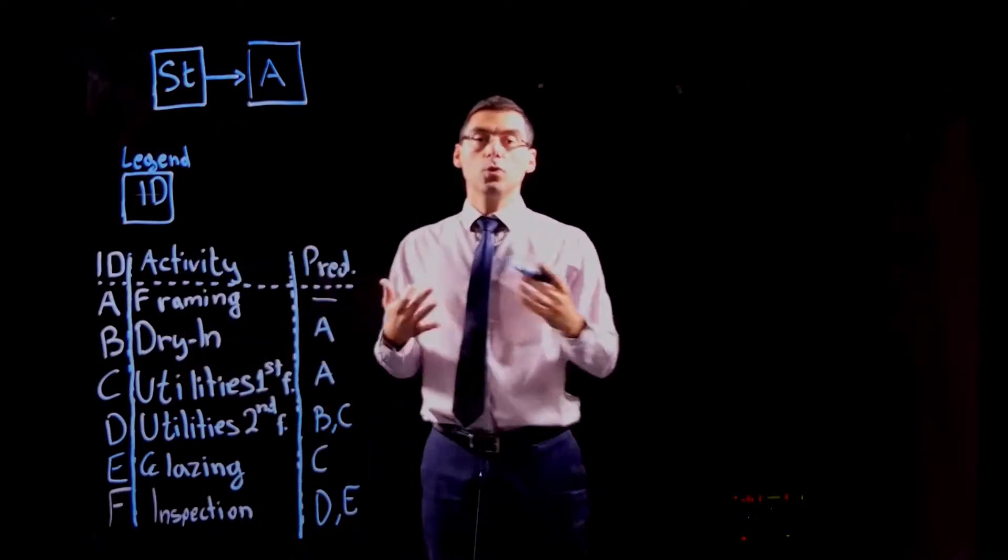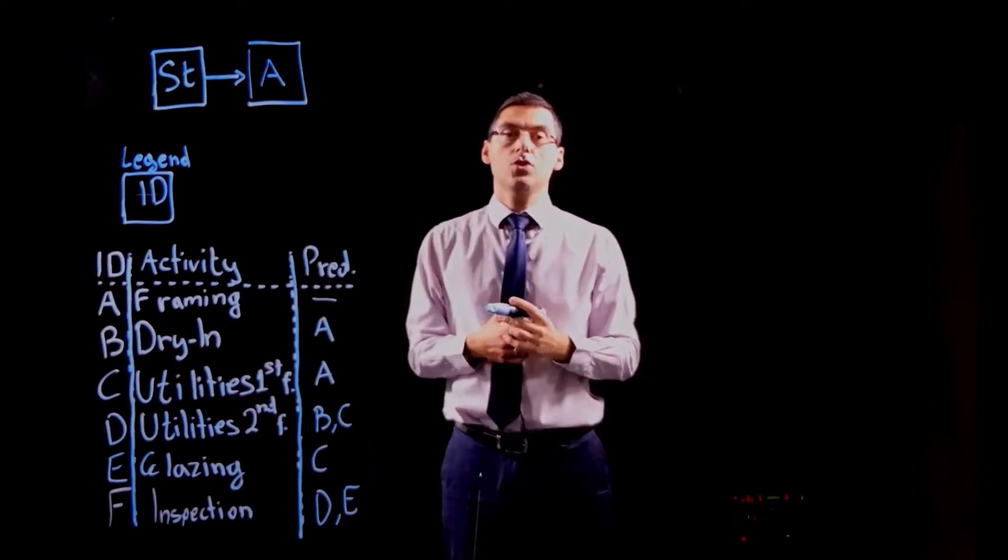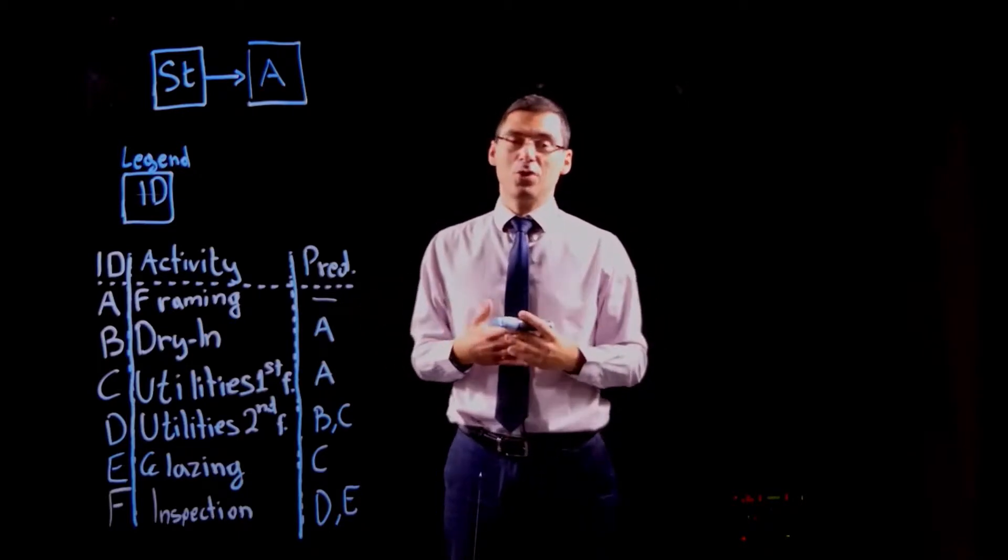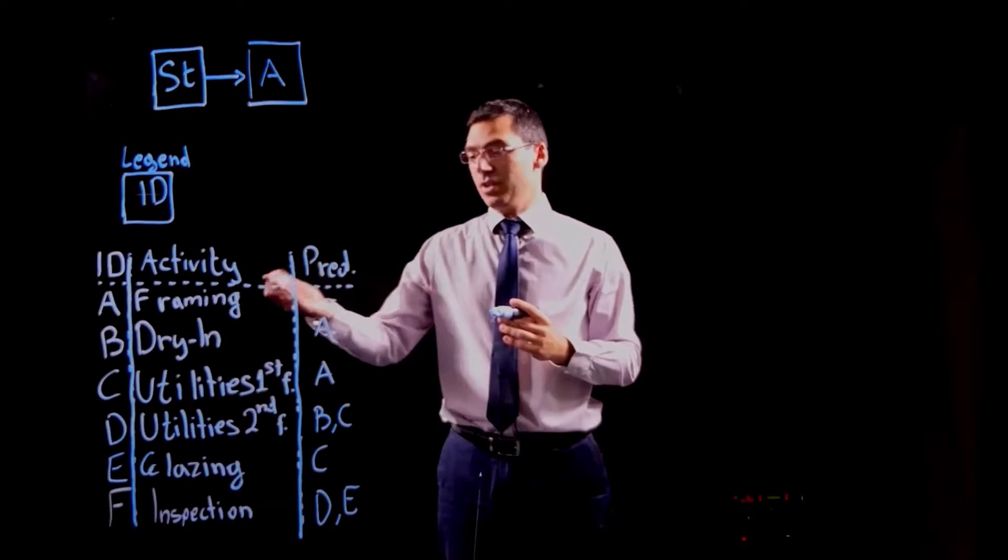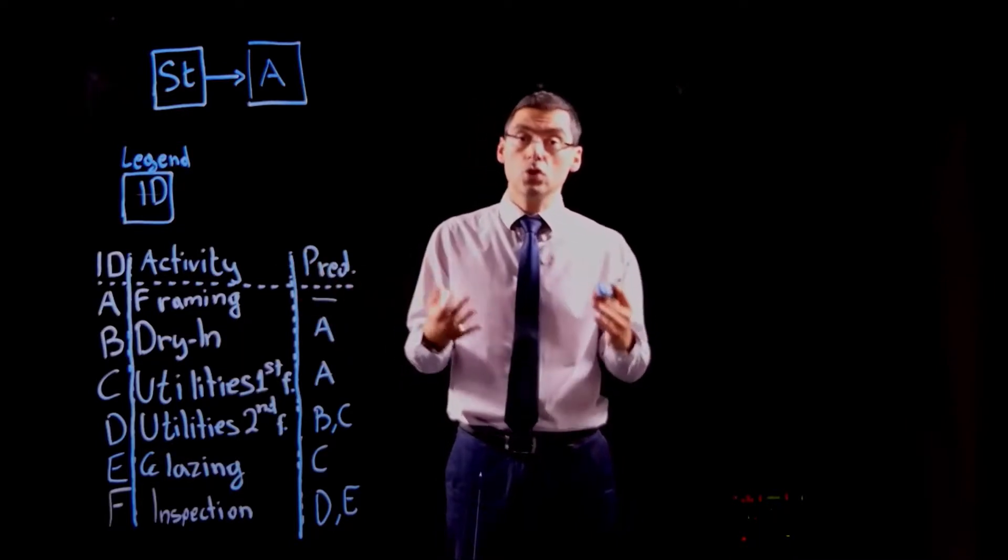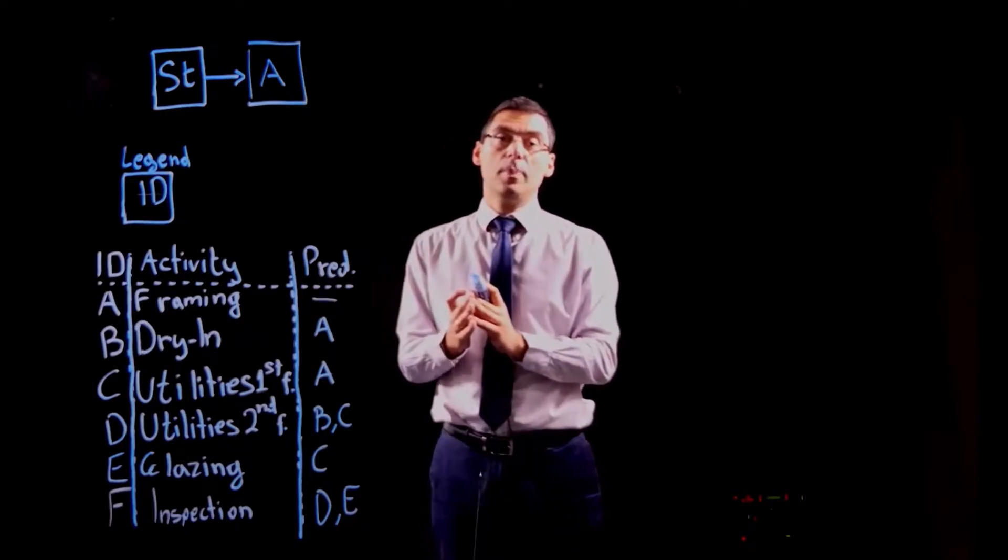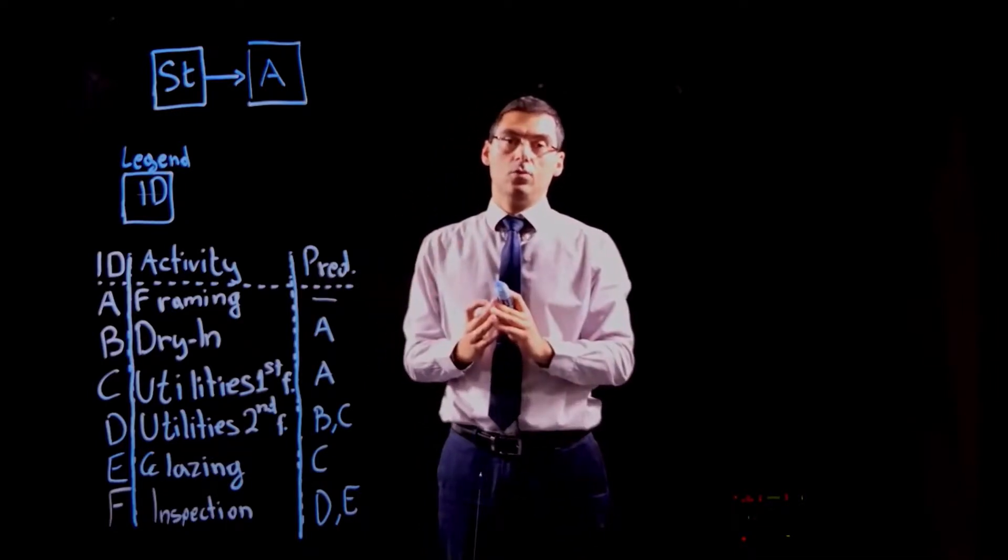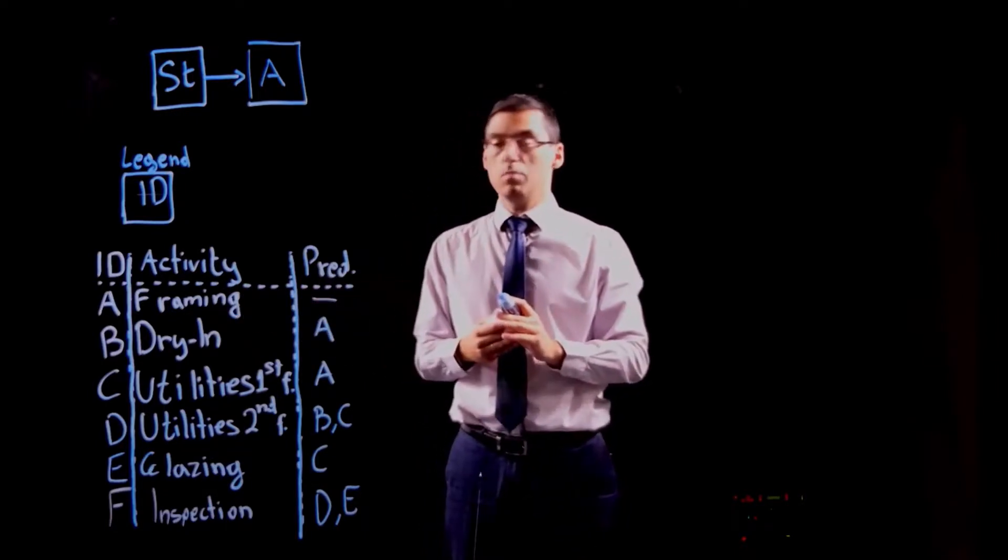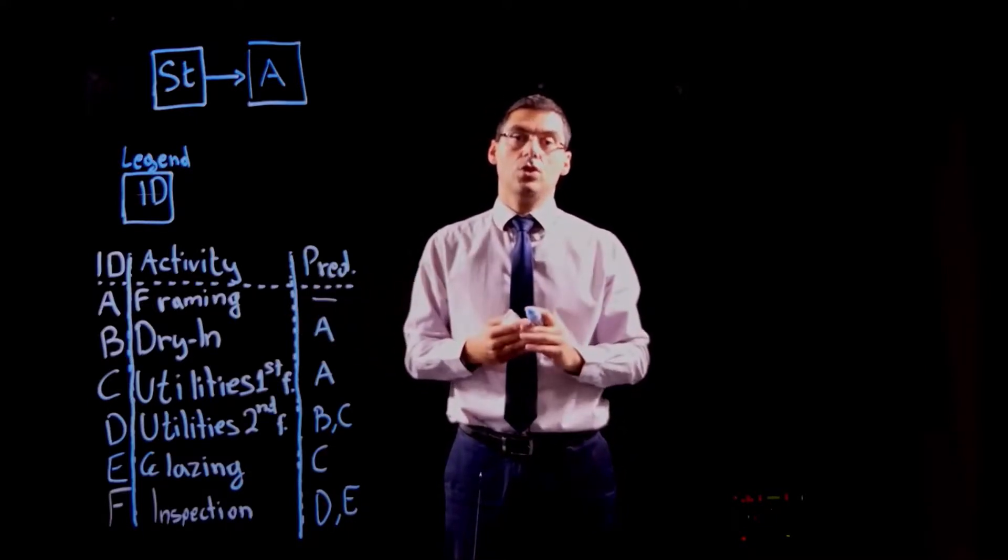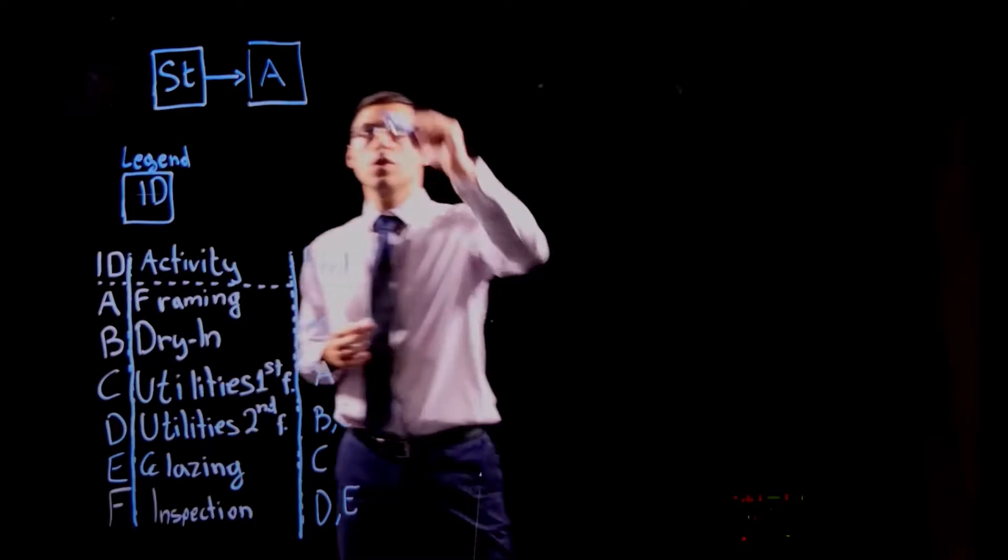Now, after you put all the activities that have no predecessors, you have to pick, the algorithm says, at random, but I bet that you're going to be cleverer than that and you're going to pick the next activity and make sure that all the predecessors of the activities that you're going to pick have already been placed in the network. That would be the case for activity B and activity C because both of them have as a single predecessor activity A.